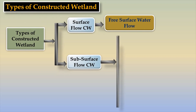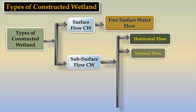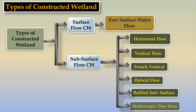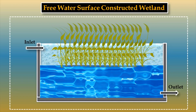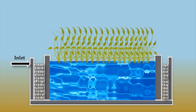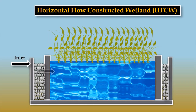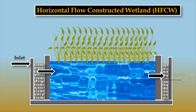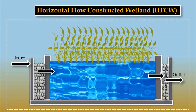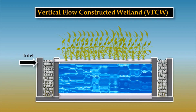Constructed wetlands are of two types: Surface Flow Constructed Wetland and Subsurface Flow Constructed Wetland. Free Water Surface Constructed Wetland is a natural wetland in which wastewater flows over the surface. In the Horizontal Flow Constructed Wetland, the wastewater flows from the inlet of the bed to the outlet of the bed horizontally. Vertical Flow Constructed Wetland is a wetland in which wastewater enters from the top and is drained out from the bottom.